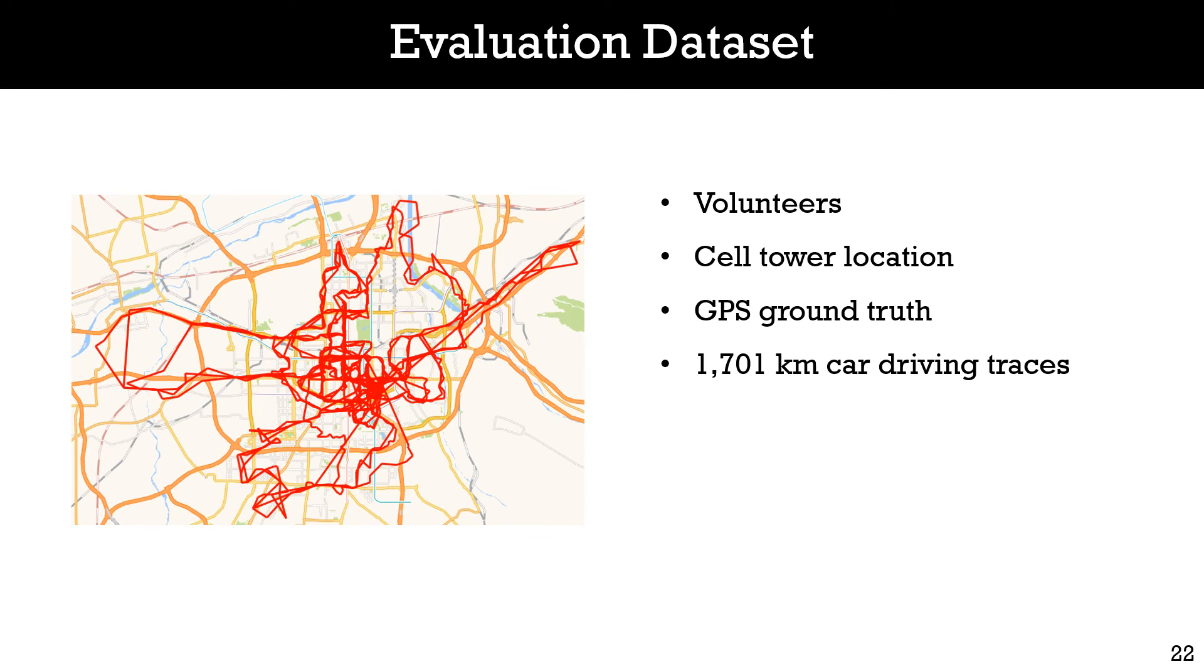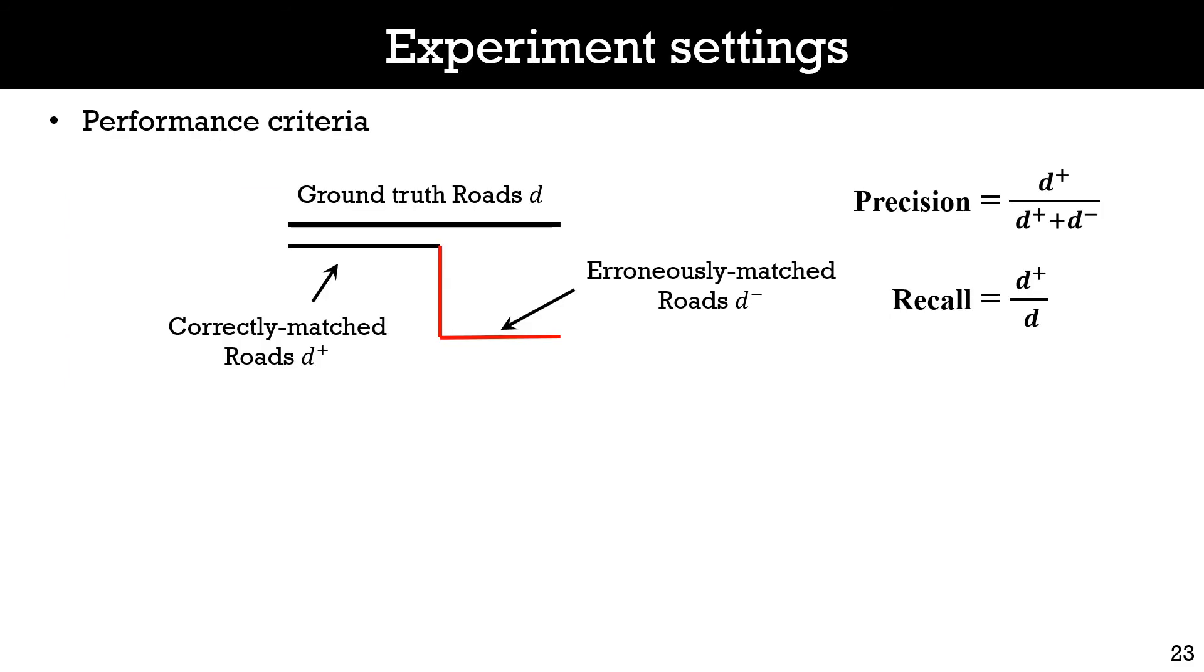To evaluate our proposed method, we recruited volunteers and collected their GPS locations as ground truth. The volunteers agreed to use their data for study. During the data collection, we asked the volunteers to equip mobile phones and drive in our city. The volunteers were required to enable GPS on their mobile phones. We installed a data collection application to record GPS locations at a high sampling rate up to one sample per second. The mobile carrier also provides the corresponding cell tower sequences of the volunteers for evaluation. In the end, we collected car driving traces over 1700 km. The traces cover various road types, such as main roads and side roads. The graphs show the coverage map of our collected dataset.